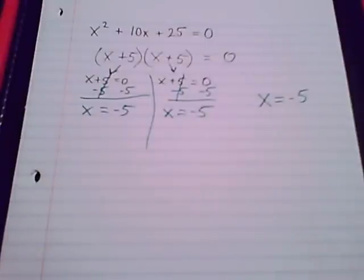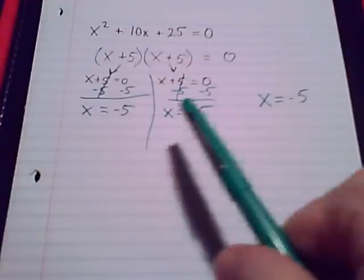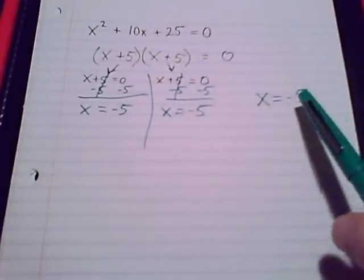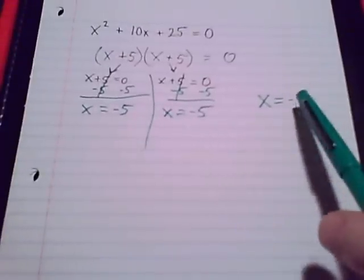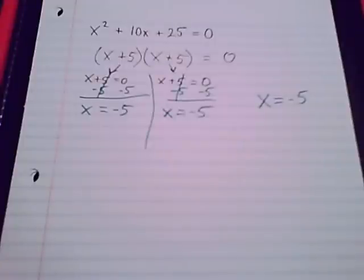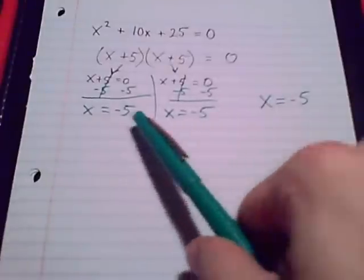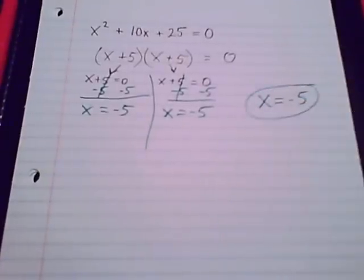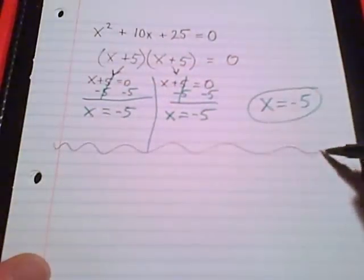You could write the solution just once — there's no need to write it twice — but there is a need to understand that we still have two solutions; it just gave us the same answer twice. That is significant. It's x equals negative 5, but it's important to know it showed up twice. You could call it a double root, or a repeated answer.